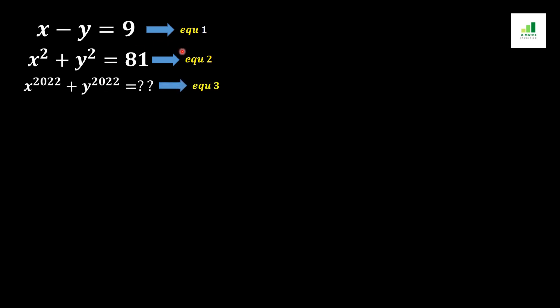To solve these equations, we first apply squaring on both sides of equation 1. The expansion of (x minus y) squared uses the (a minus b) squared formula: x squared plus y squared minus 2xy, and 9 squared equals 81.